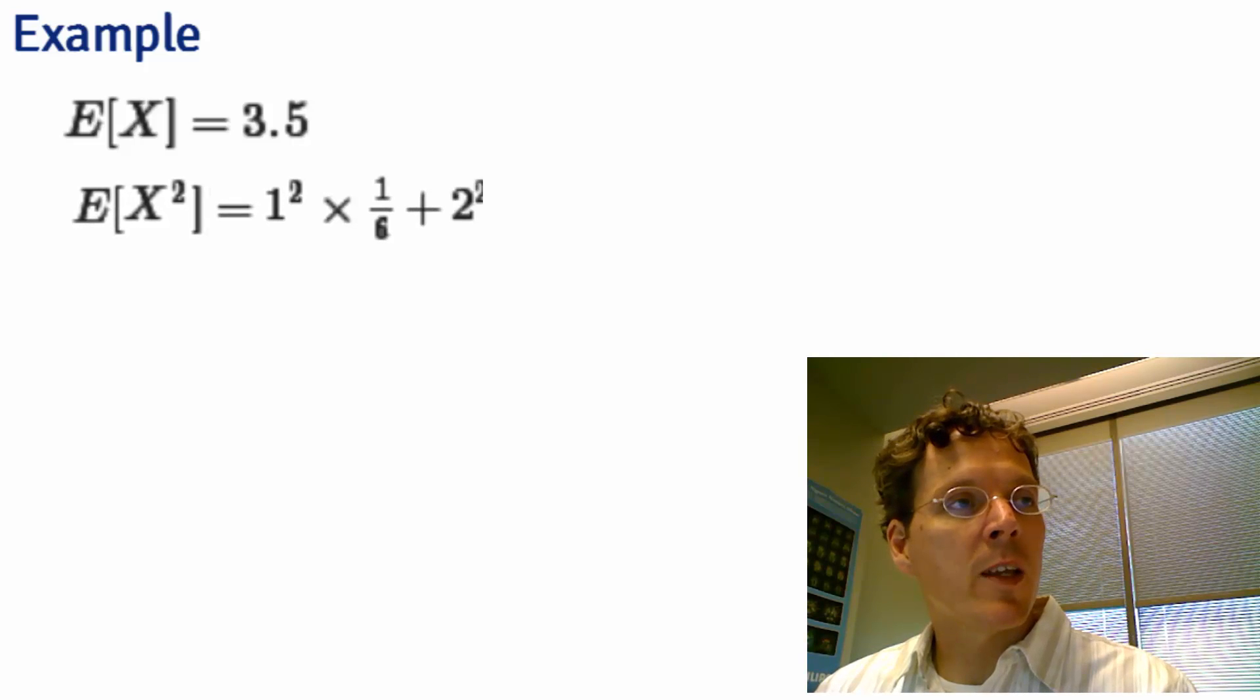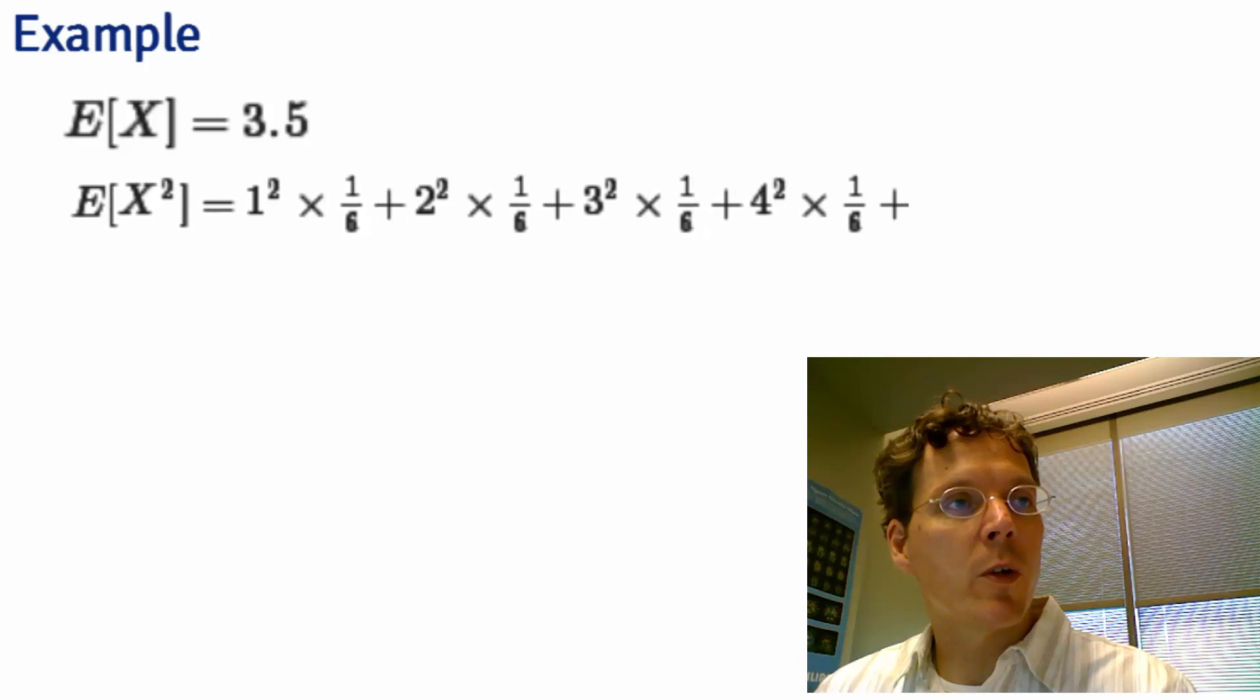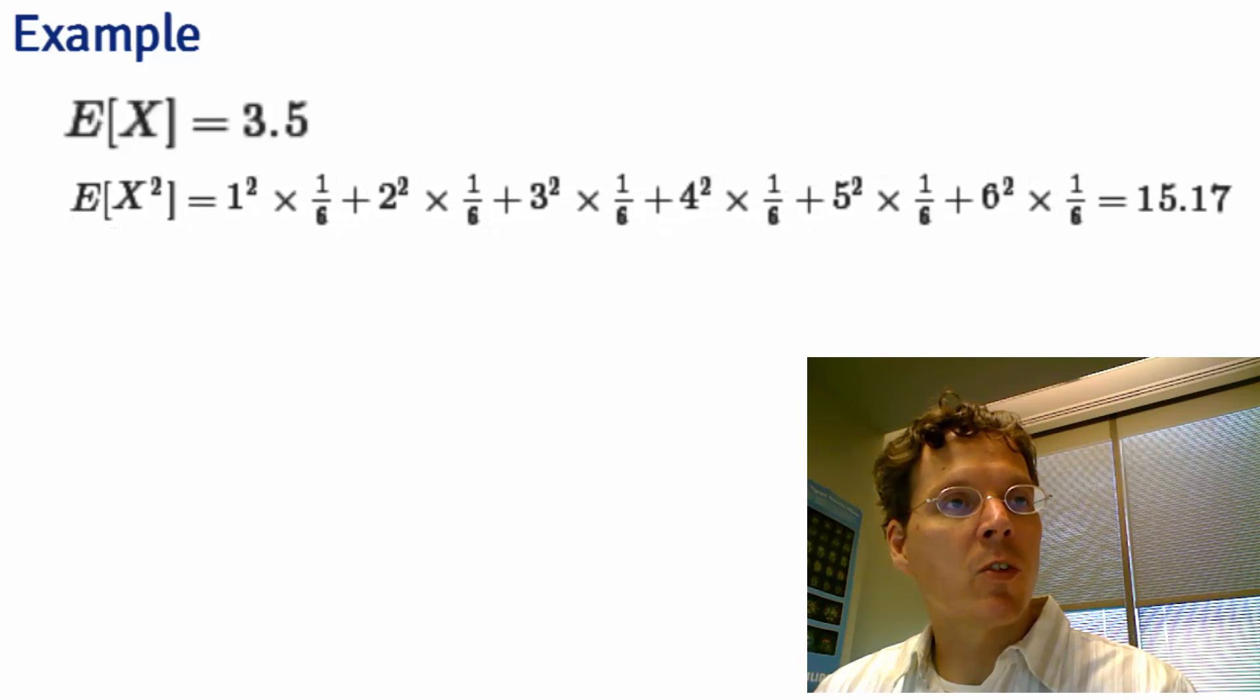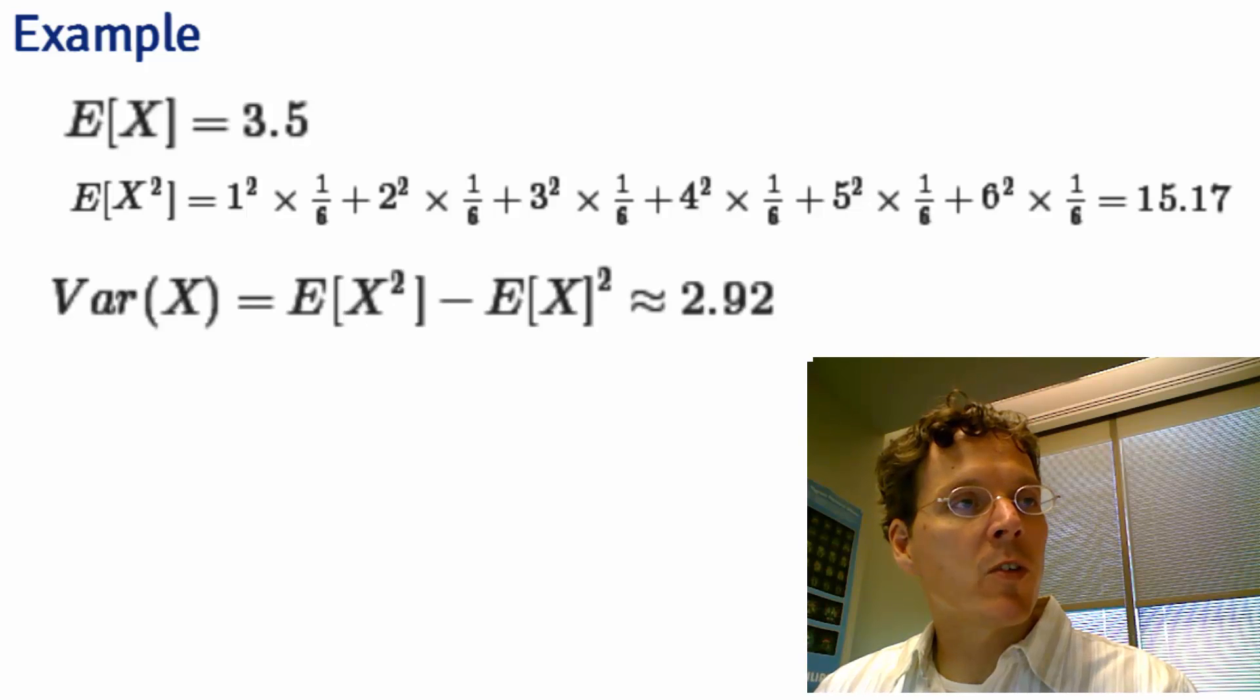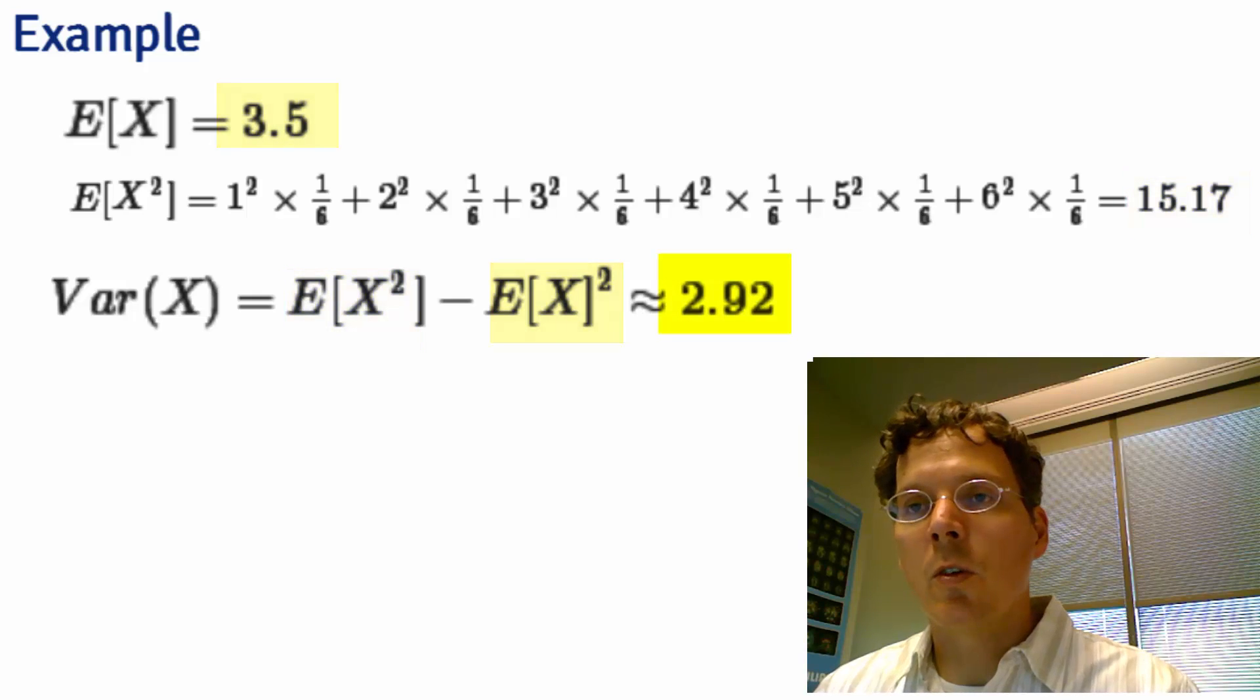You can do that by simply taking the numbers, for example 1 squared, 2 squared, 3 squared, 4 squared, 5 squared, and multiplying by their associated probabilities, and you get 15.17. If I subtract 15.17 minus 3.5 squared, I get 2.92, which is the variance of a die roll.